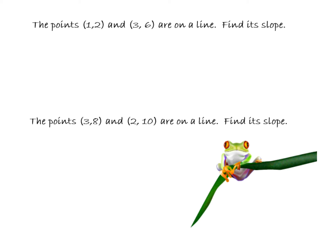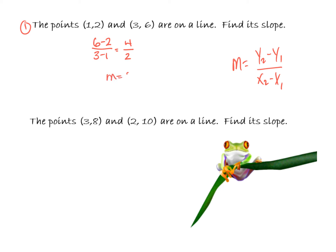Let's find the slope using other points. Points one, two and three, six are on the line — we want to find its slope. I'll write the formula again. For problem number one, we subtract our y's: six minus two, over x's: three minus one. Six minus two is four, three minus one is two. So the slope of my line is four over two, or two.